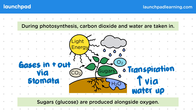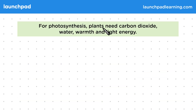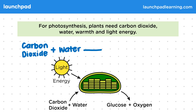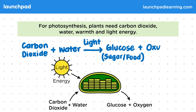Can you think what factors are needed for photosynthesis to occur? For photosynthesis, plants need carbon dioxide, water, warmth, and light energy. The proper name for the product of photosynthesis is glucose, but you may also see this referred to as sugars or food. So inside the chloroplast of plant cells, carbon dioxide and water are reacting. This happens using the transfer of light energy from the sun to produce glucose and oxygen.